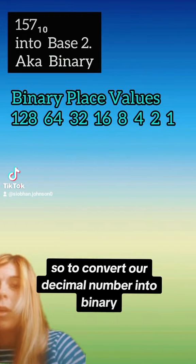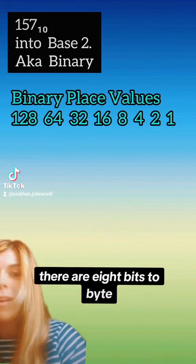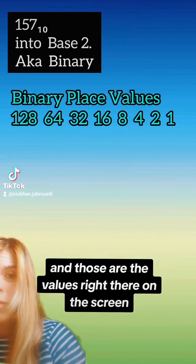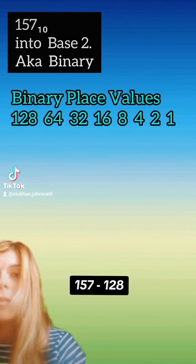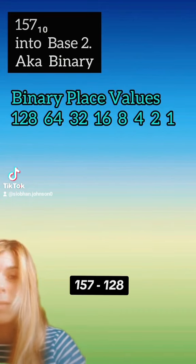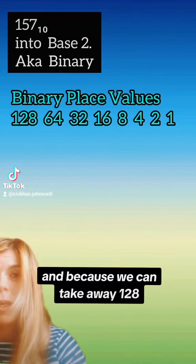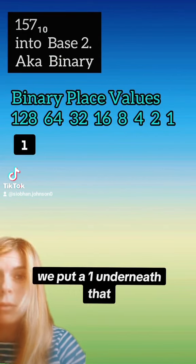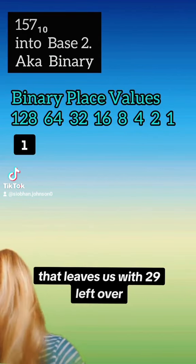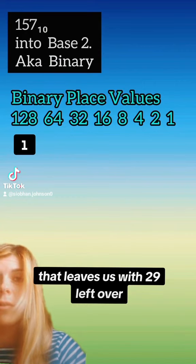To convert our decimal number into binary we need to know about binary place values. There are 8 bits in a byte, and those are the values right there on the screen. So we take our 157 and we take away 128. Because we can take away 128, we put a 1 underneath that. That leaves us with 29 left over.